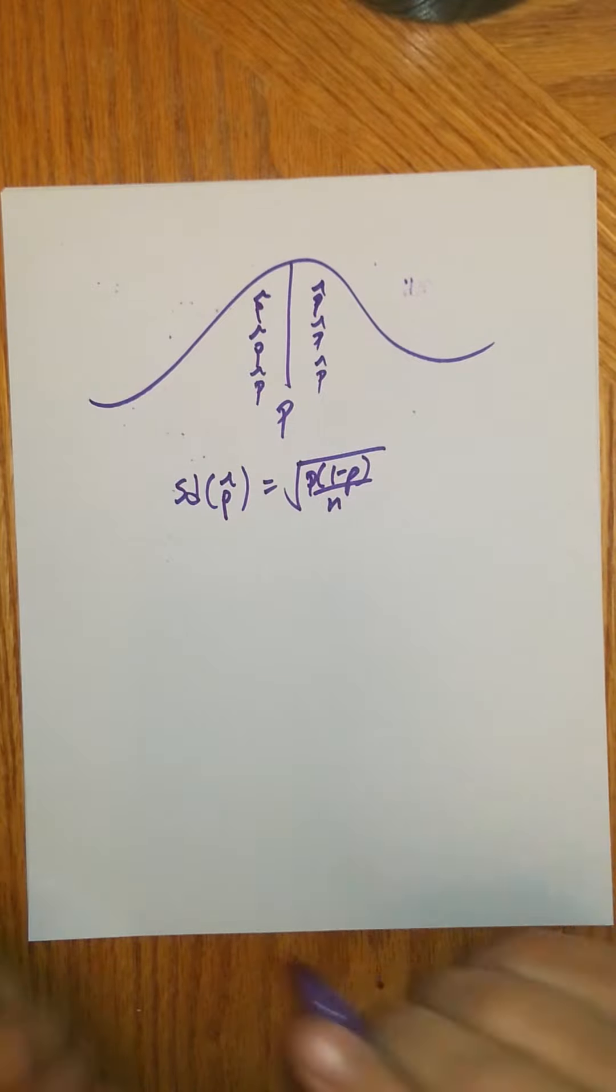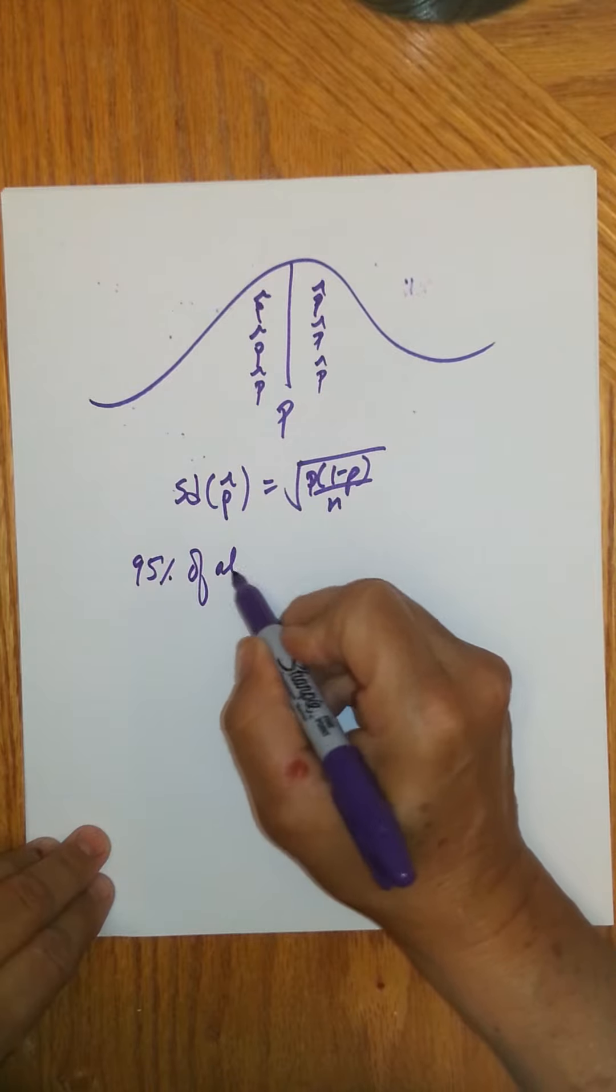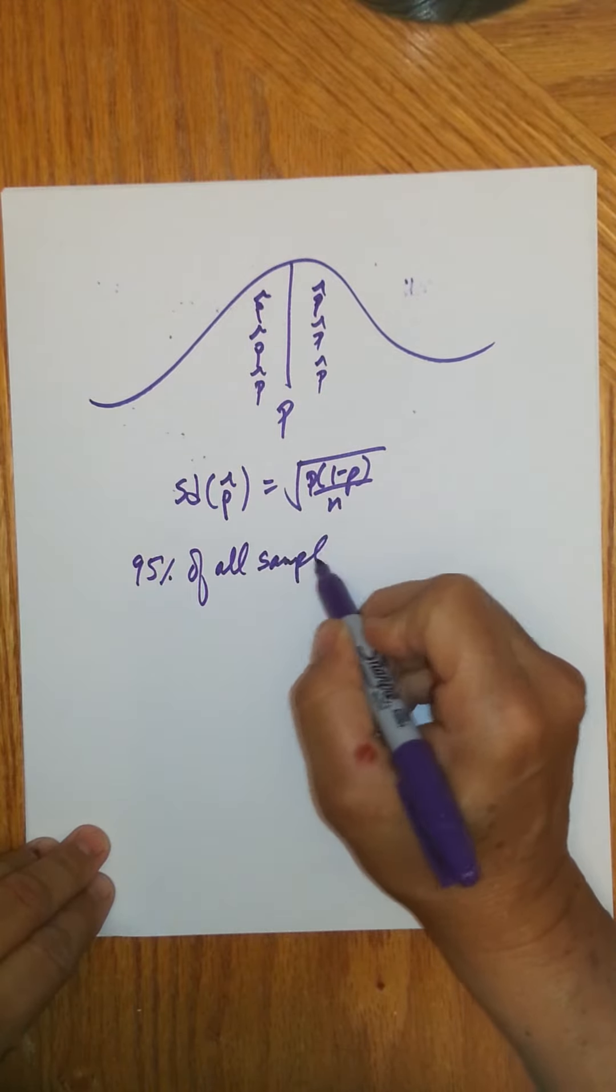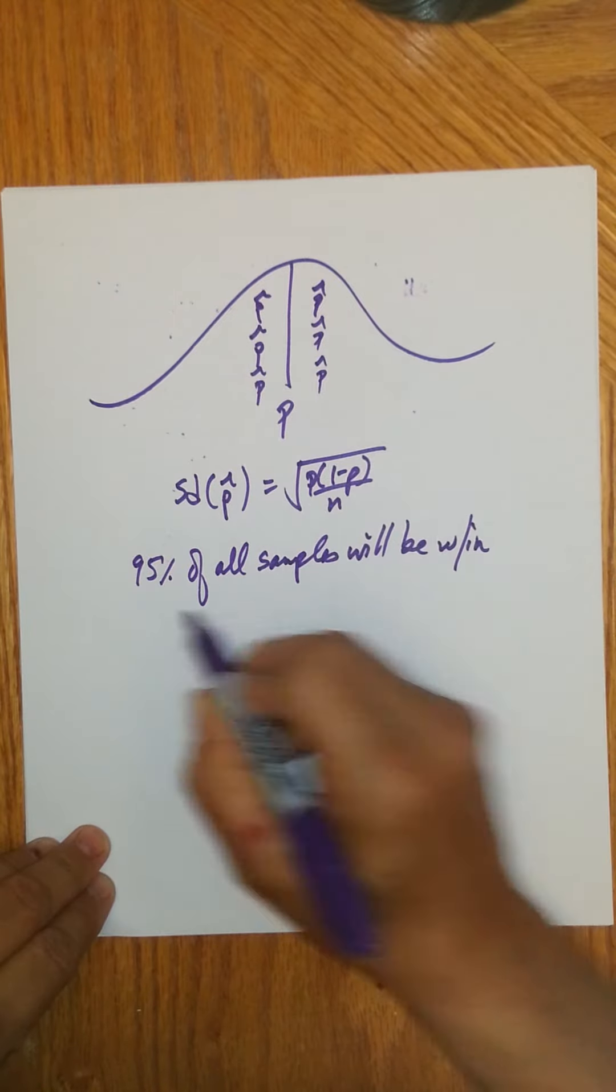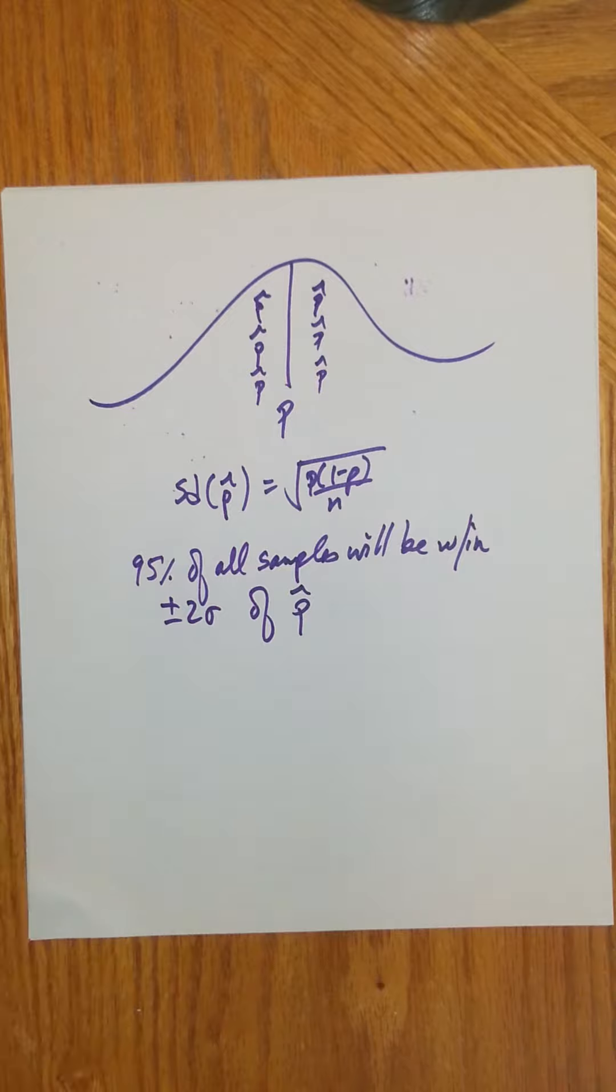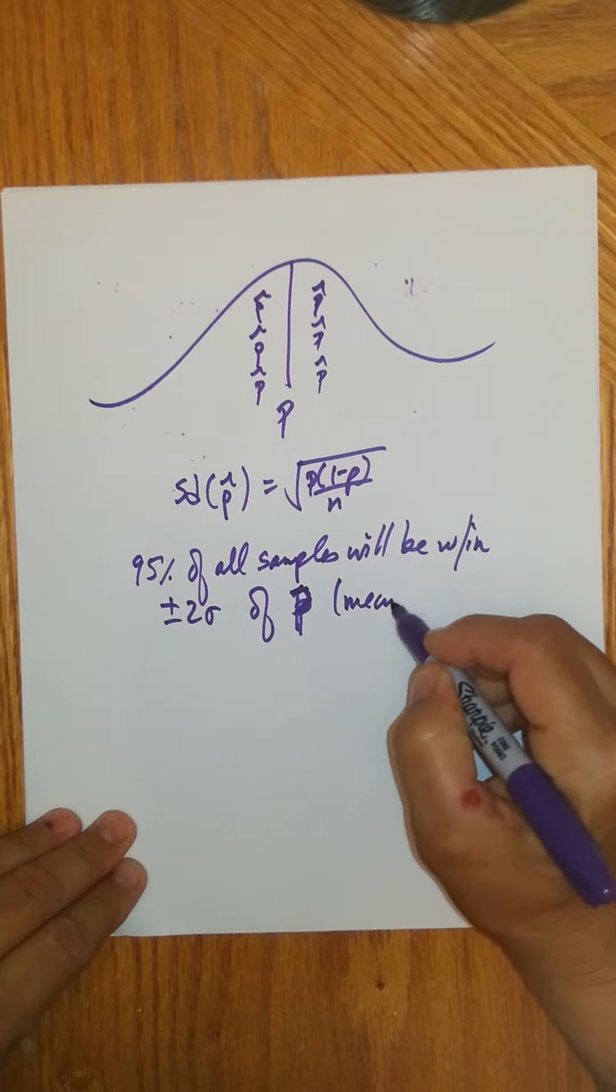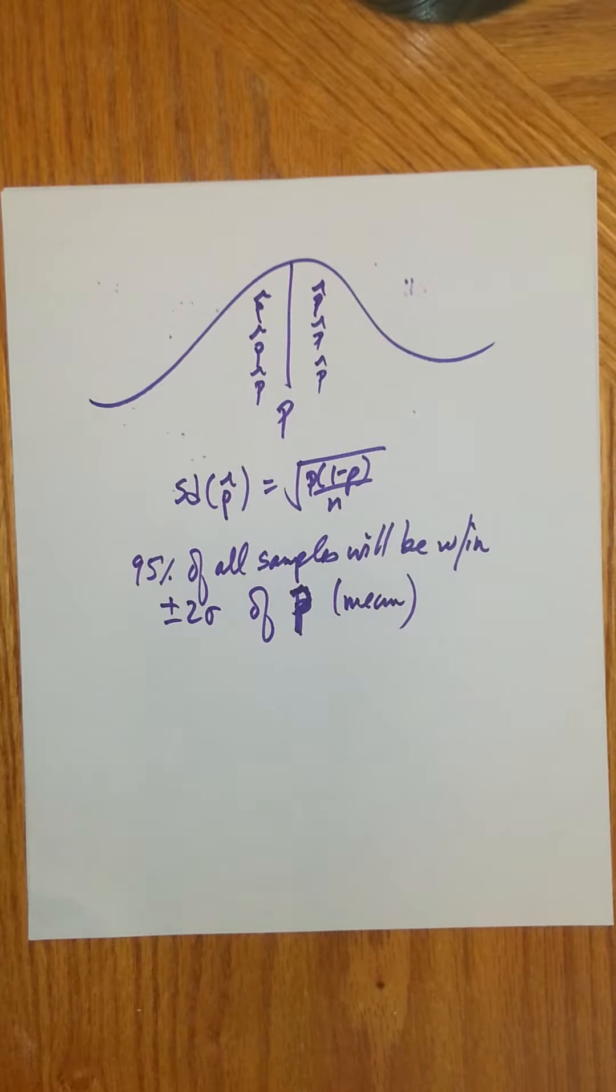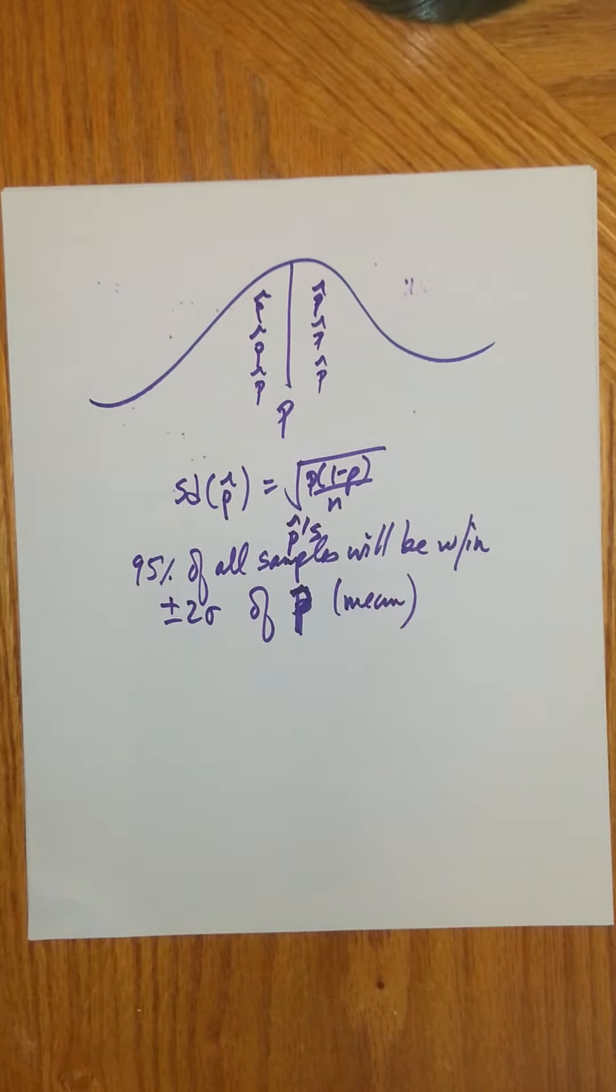So we knew how samples behave. And specifically, if we looked, for example, we knew that 95% of all samples will be within two standard deviations of what? p, the mean. I'm sorry, not p-hat, p, the mean, or the truth, right? Where your samples are your p-hats.